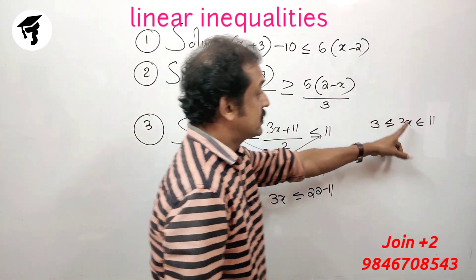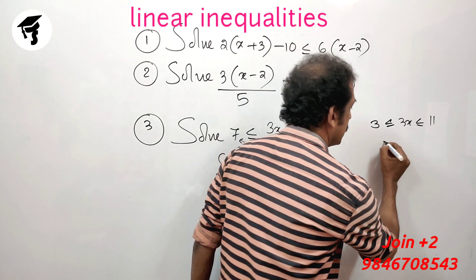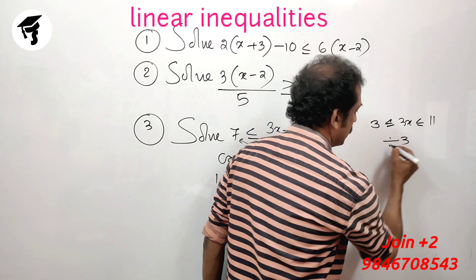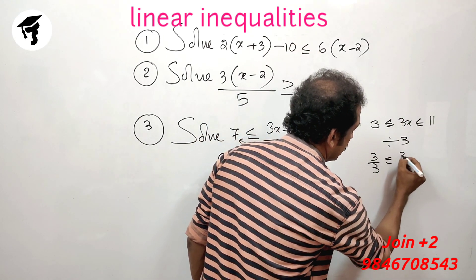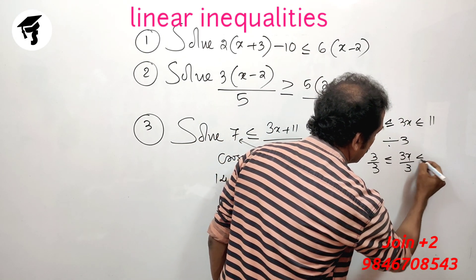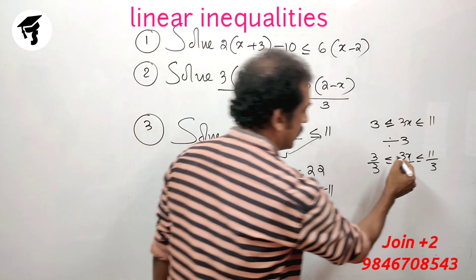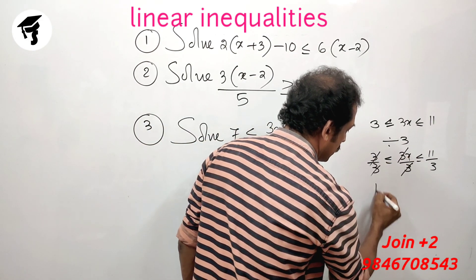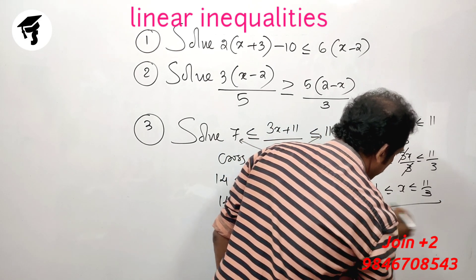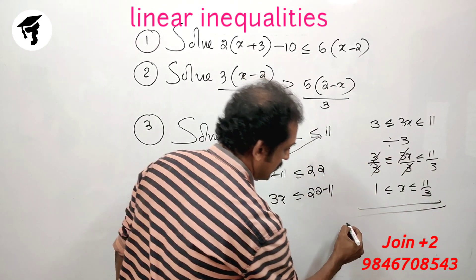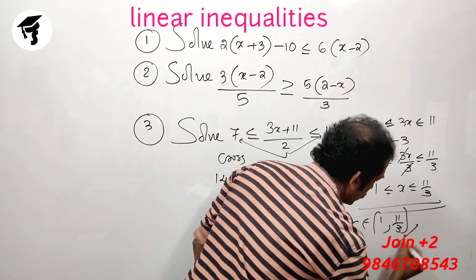So 3 less than or equal to 3x less than or equal to 11. Now divide by 3: 3 divided by 3 less than or equal to 3x by 3 less than or equal to 11 by 3. The 3 cancels, giving us 1 less than or equal to x less than or equal to 11 by 3. That means x is an element of the closed interval [1, 11/3].